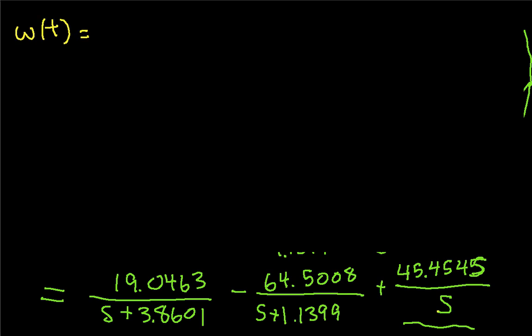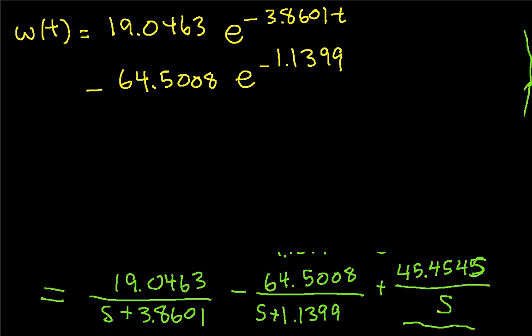So we have that omega of T is given by the coefficient, e to the minus 3.8601 T, minus the next coefficient, e to the minus 1.1399 T, plus 45.4545 U of T. And to do this properly, there's a U of T on each of the exponentials to make sure that it's clear that for values of T less than 0, they're 0. So here we have the time value for this signal.